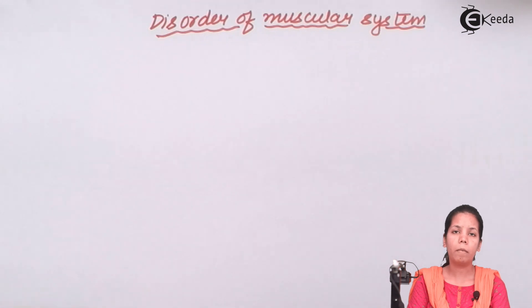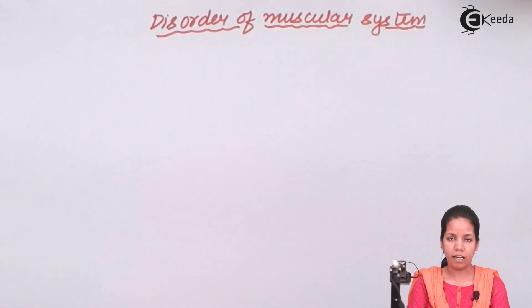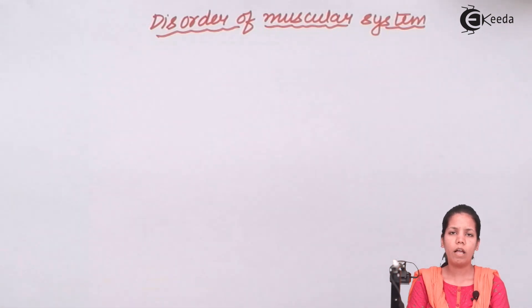There are a few disorders that happen quite often in the muscular system or to the bones, and those are muscular dystrophy, osteoporosis, myasthenia gravis, tetanus, and arthritis.